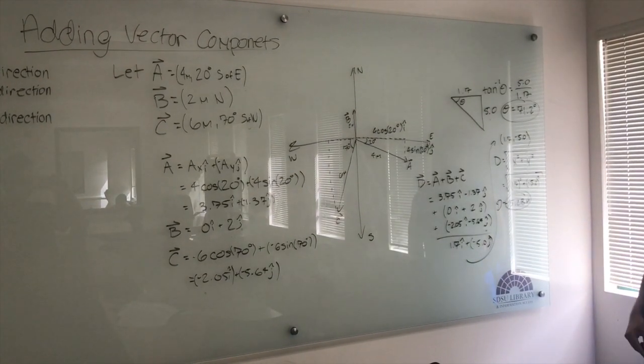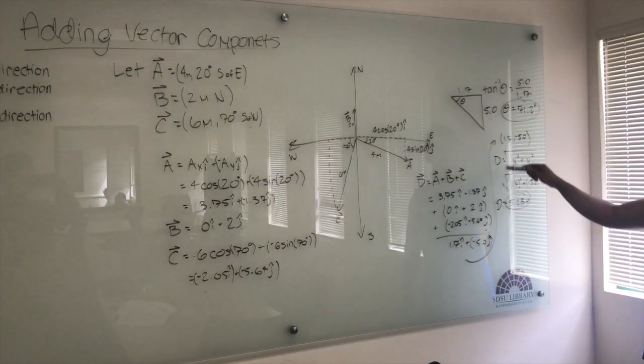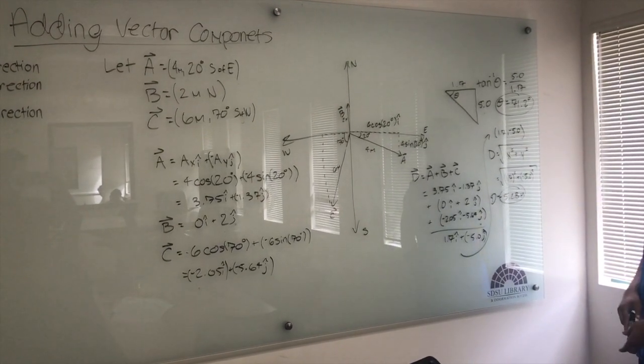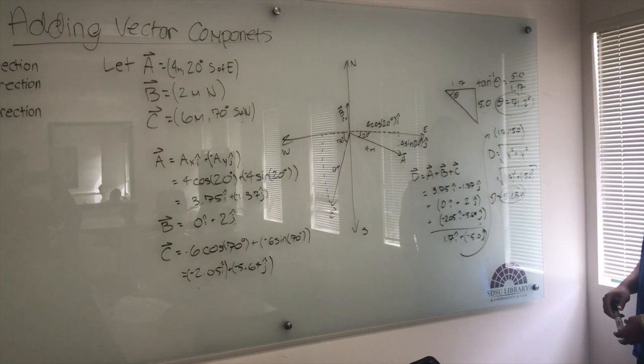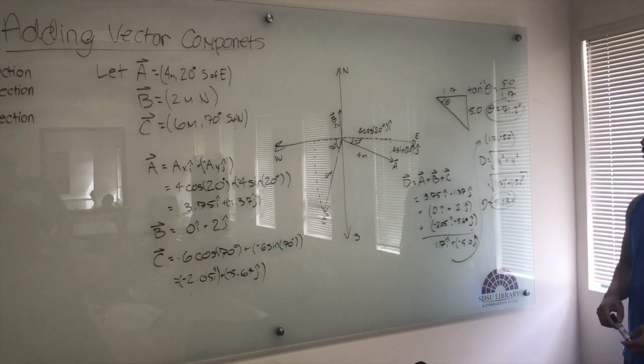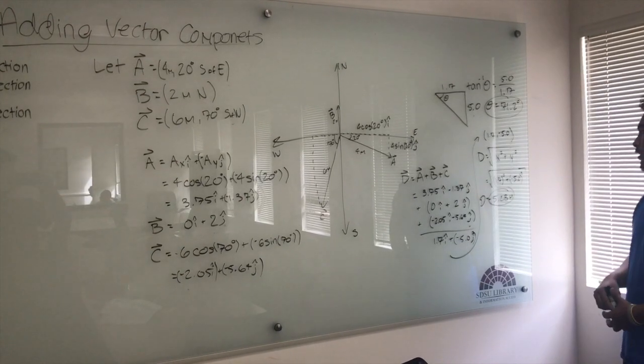That goes to, in Cartesian form, it's 1.7 comma negative 5.0. So once you get those two coordinates, for the distance you plug in the distance formula to get the length of that vector d.